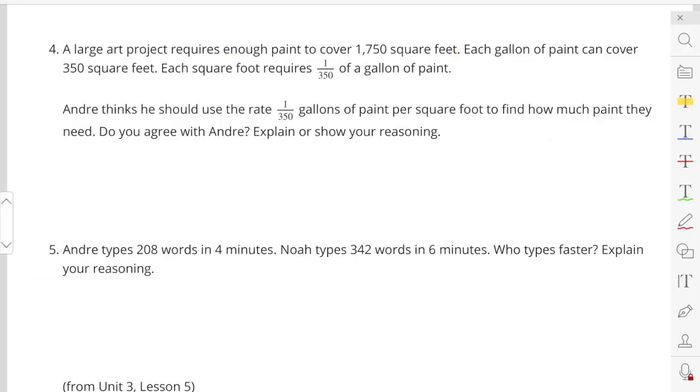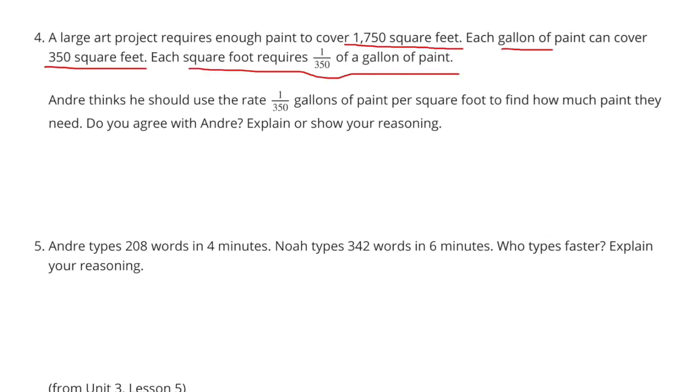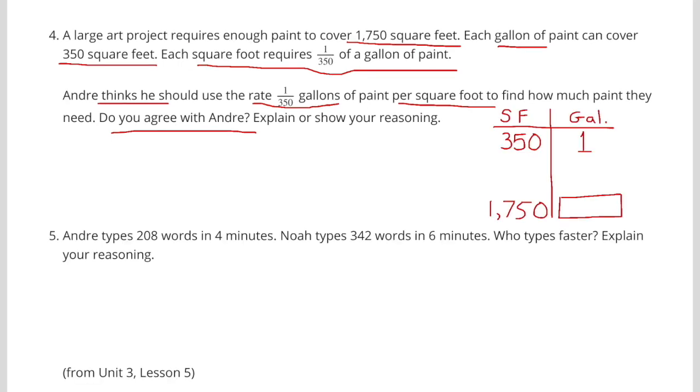Number 4. A large art project requires enough paint to cover 1,750 square feet. Each gallon of paint can cover 350 square feet. Each square foot requires 1 over 350th of a gallon of paint. Andre thinks he should use the rate 1 over 350 gallons of paint per square foot to find how much paint they need. Do you agree with Andre? Explain or show your reasoning. Well, first of all, yes, I agree.